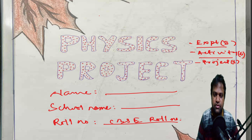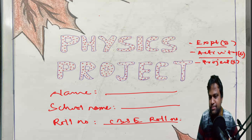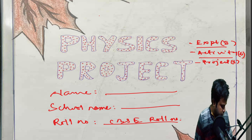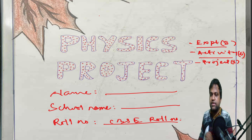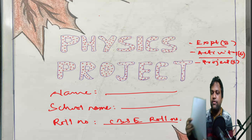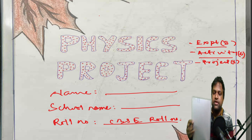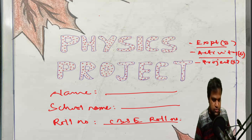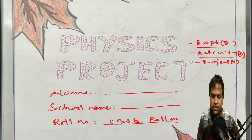You should take some observations of your own — that will be helpful to you. For the front page, as per your interest you can design it beautifully. You can write 'Physics Project,' your name, your school name, and roll number. A channel file will be better for the physics project.